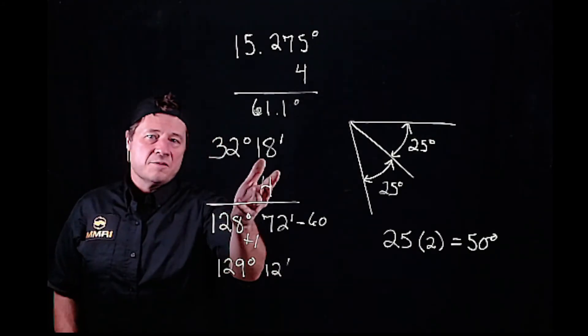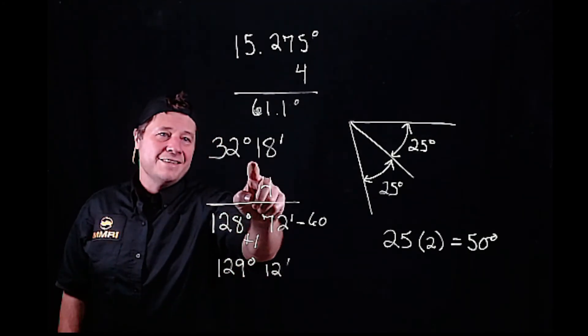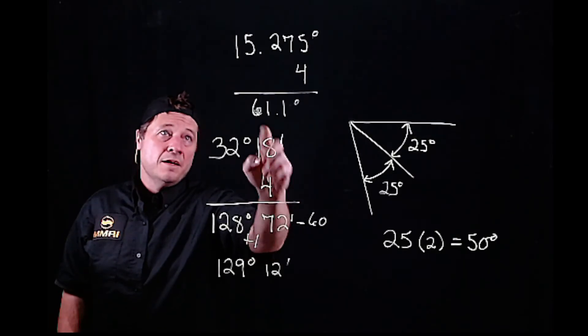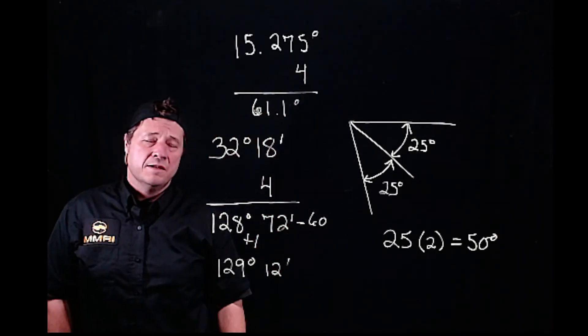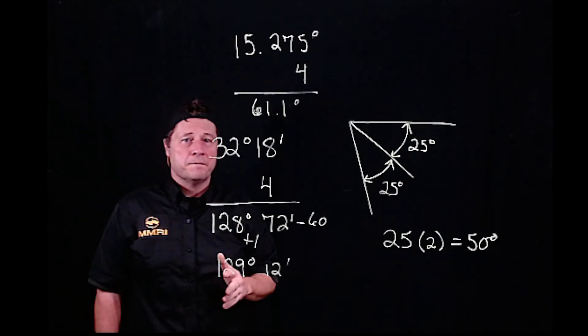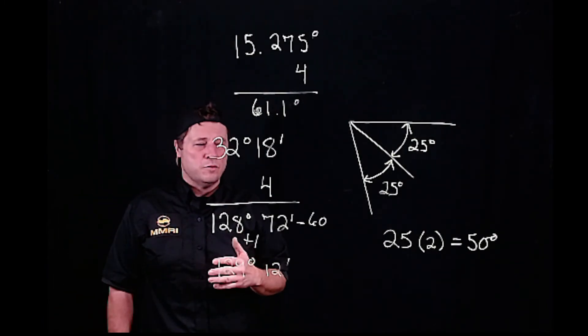It's only minutes if there's no decimal, like 32 degrees 18 minutes. If we have a decimal, we call it decimal degrees, and this is important when we move on to trigonometry.